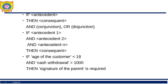AND and OR are used to combine antecedents and consequents. You can have multiple antecedents joined with AND or OR. For example: if the age of the customer is less than 18 AND the cash withdrawal is greater than 1000, then the signature of a parent is required.